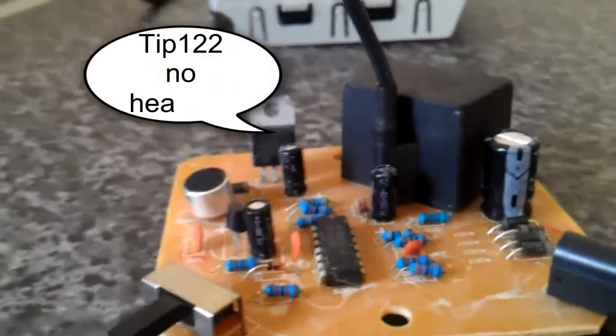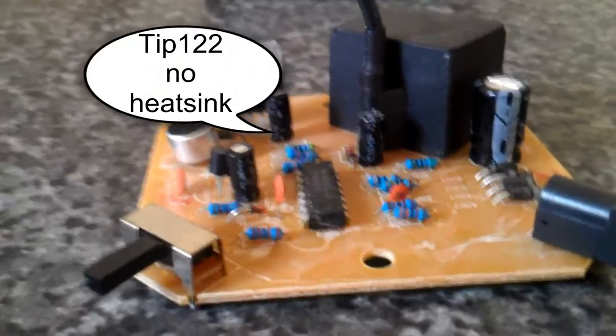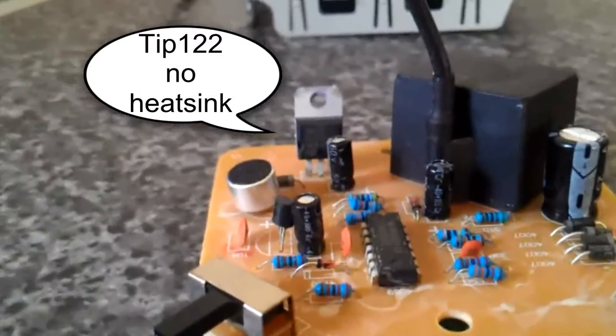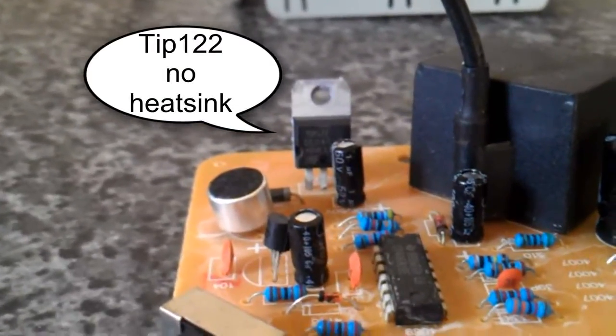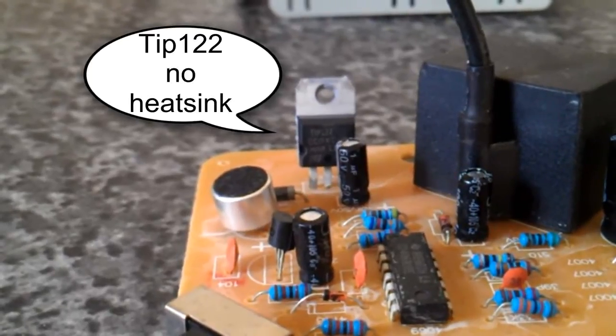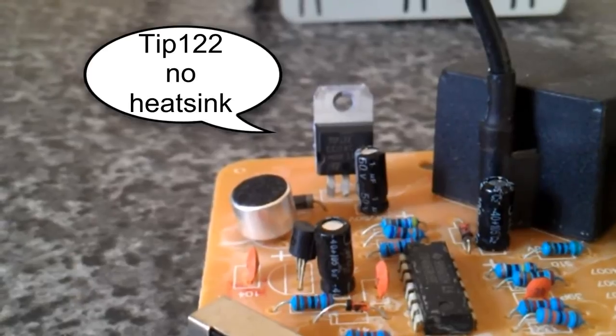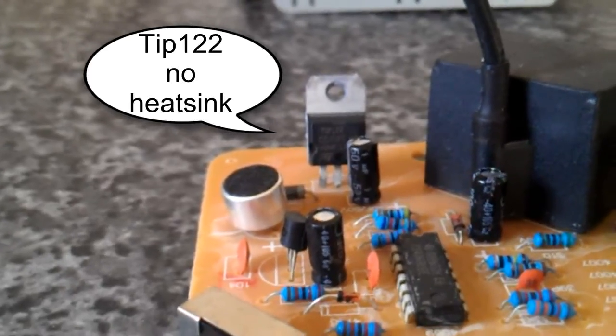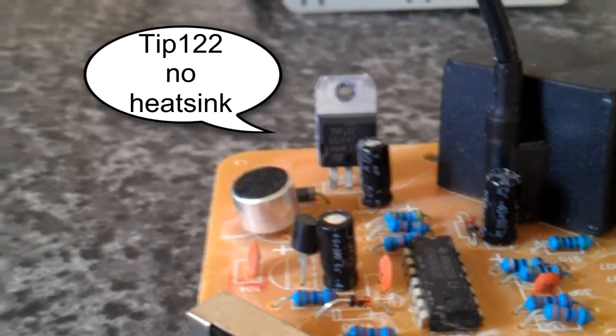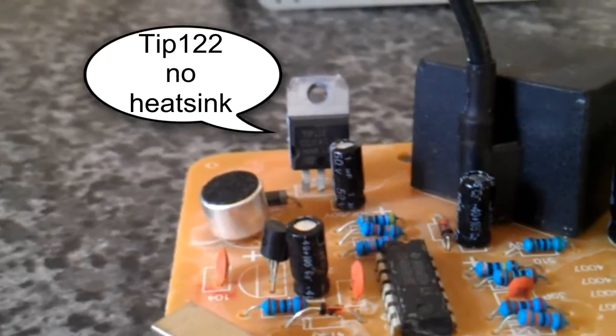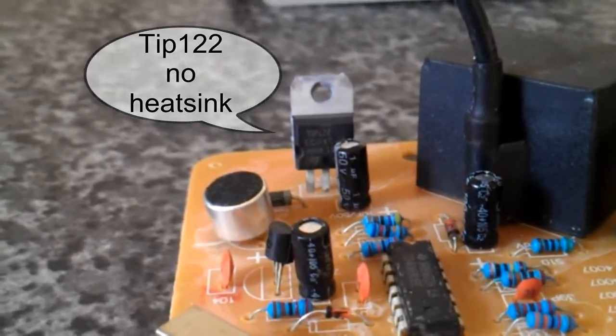This is the circuit for my plasma ball, which has got a TIP122 transistor in it, which I plan on replacing for a TIP100 to see whether it gives any better effect basically. We'll see how things go.